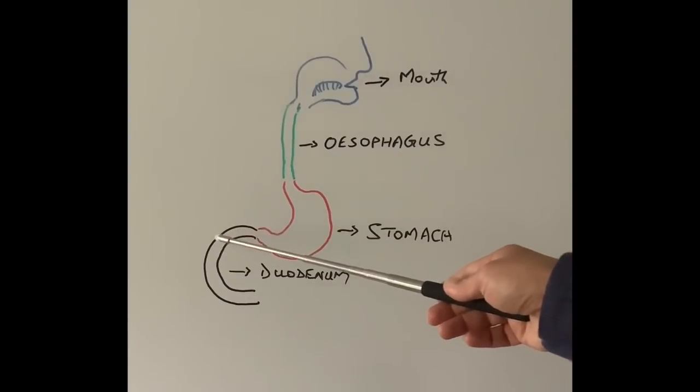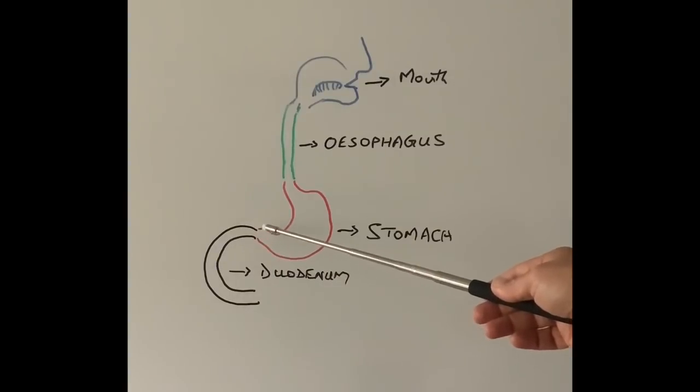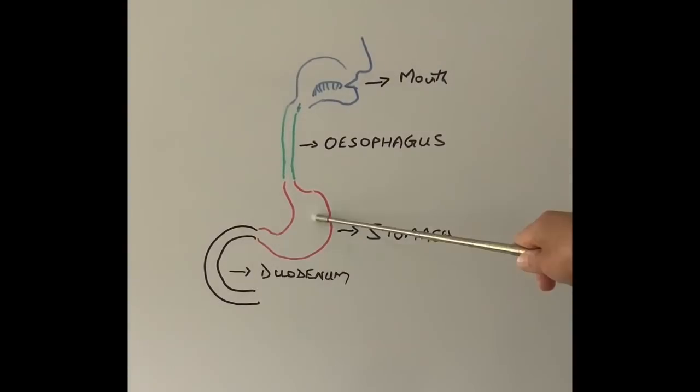And then we are coming to the duodenum. The most important thing in the duodenum is ulcers. They are the commonest thing along with inflammation of the duodenum called duodenitis. So those are the main things endoscopists are looking at.